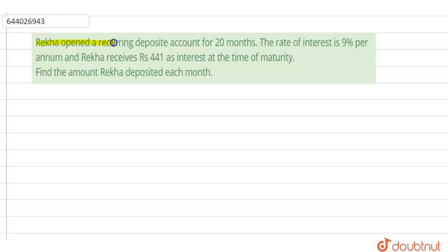it is given Rekha opened a recurring deposit account for 20 months. The rate of interest is 9 percent per annum and Rekha receives rupees 441 as interest at the time of maturity. We have to find the amount Rekha deposited each month.